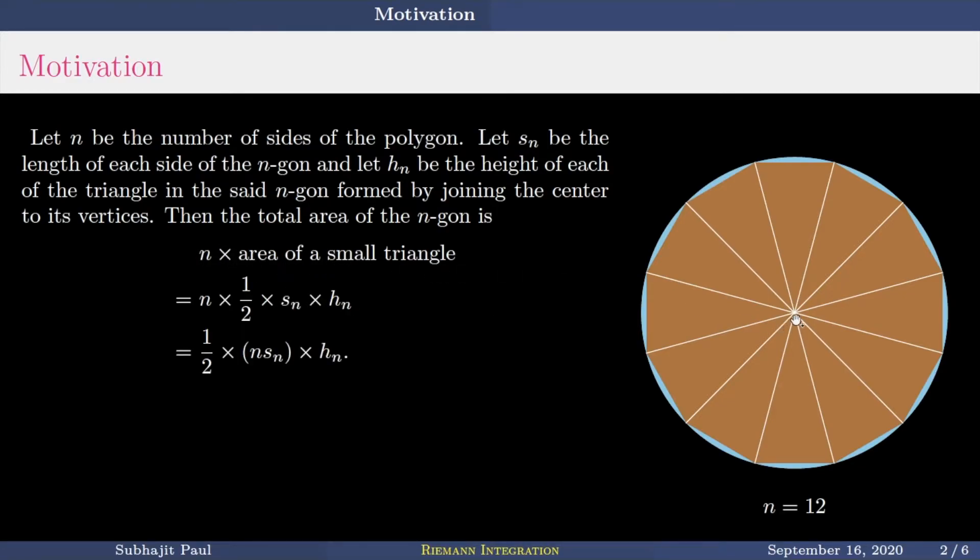So there are N many congruent triangles thus formed. If you join all the vertices to the center of the circle, then you get N many congruent triangles. So all of them are same in area. If you know the area of one triangle, then it will give you the area of the entire polygon. So that is N times area of a small triangle.